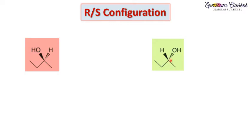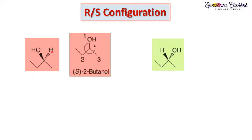This is 2-butanol — carbon chain 1, 2, 3, 4 — with the OH group at the second position. In one image the OH is on the solid wedge, whereas in the other image the OH is on the dashed wedge. We have made one interchange between both molecules, so these are enantiomers. How are we going to assign the RS configuration for these two molecules?